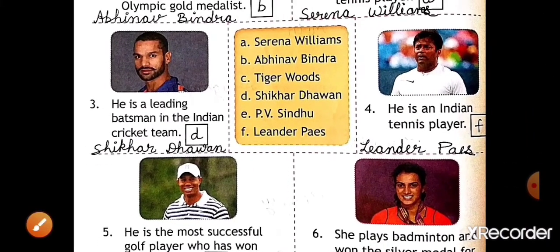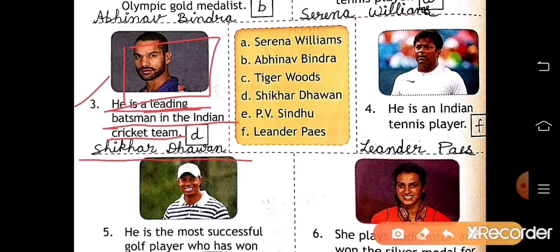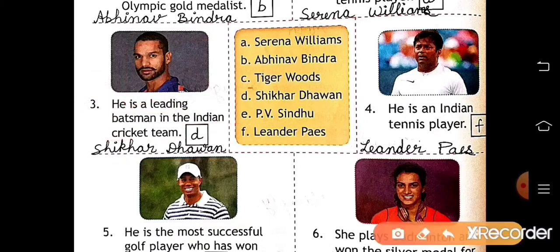Now number three: he is a leading batsman in the Indian cricket team. So who is he? Shikhar Dhawan. Shikhar Dhawan is at D number, so write D here and write the name also — Shikhar Dhawan.